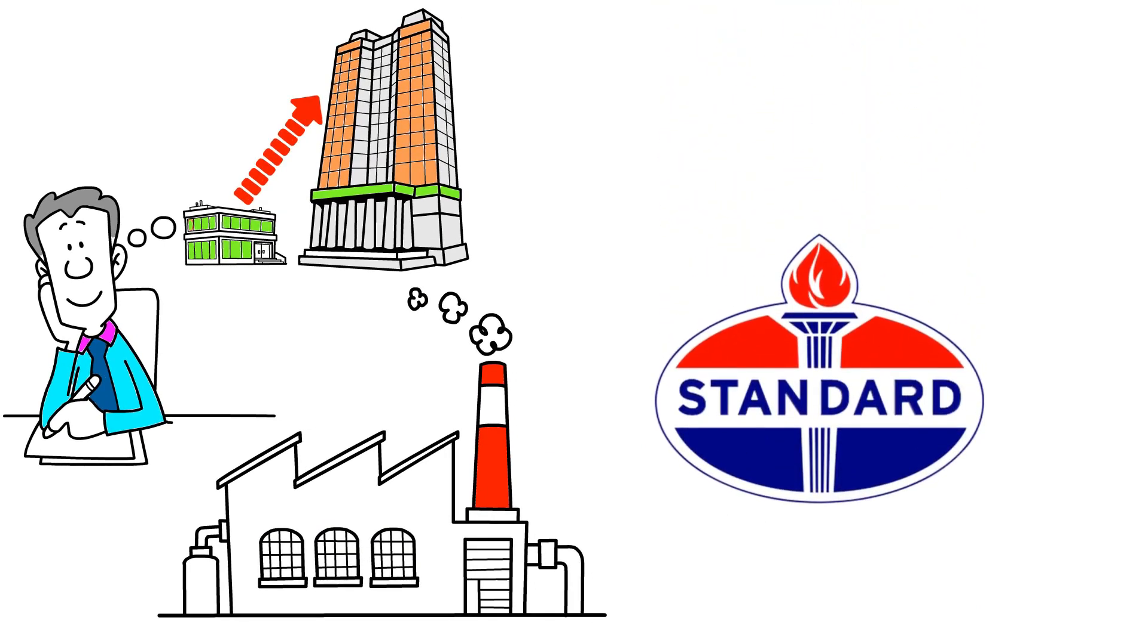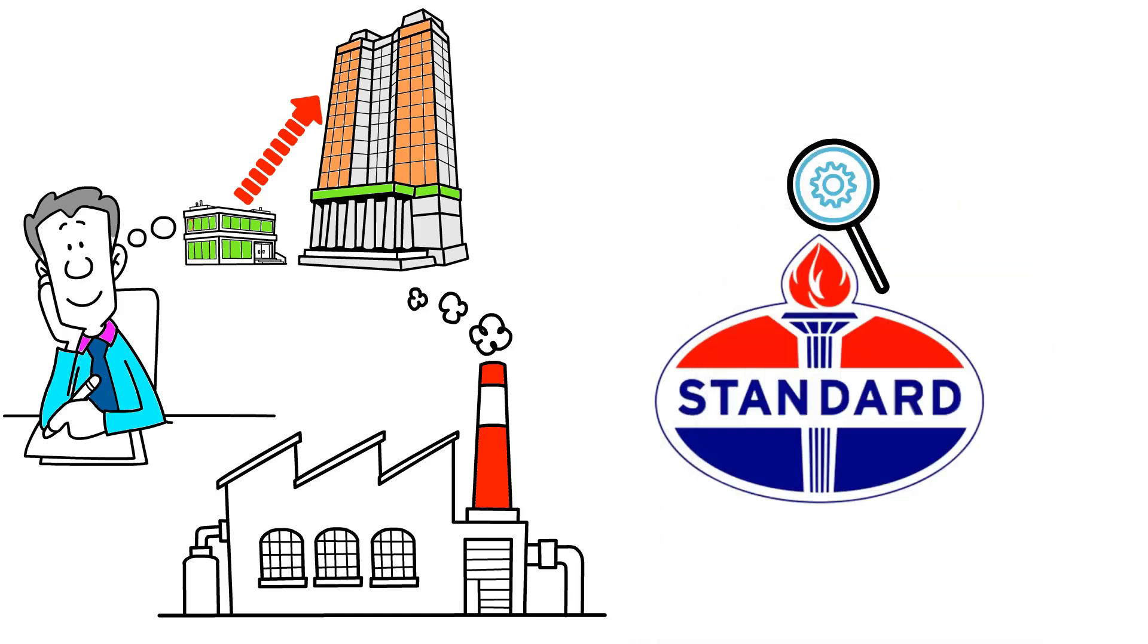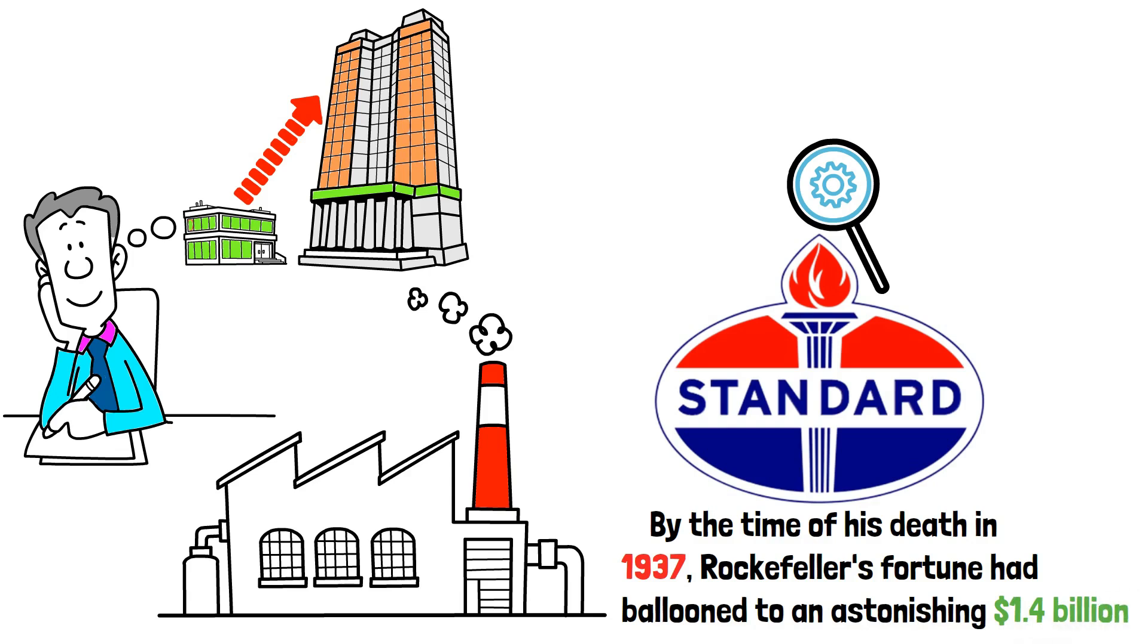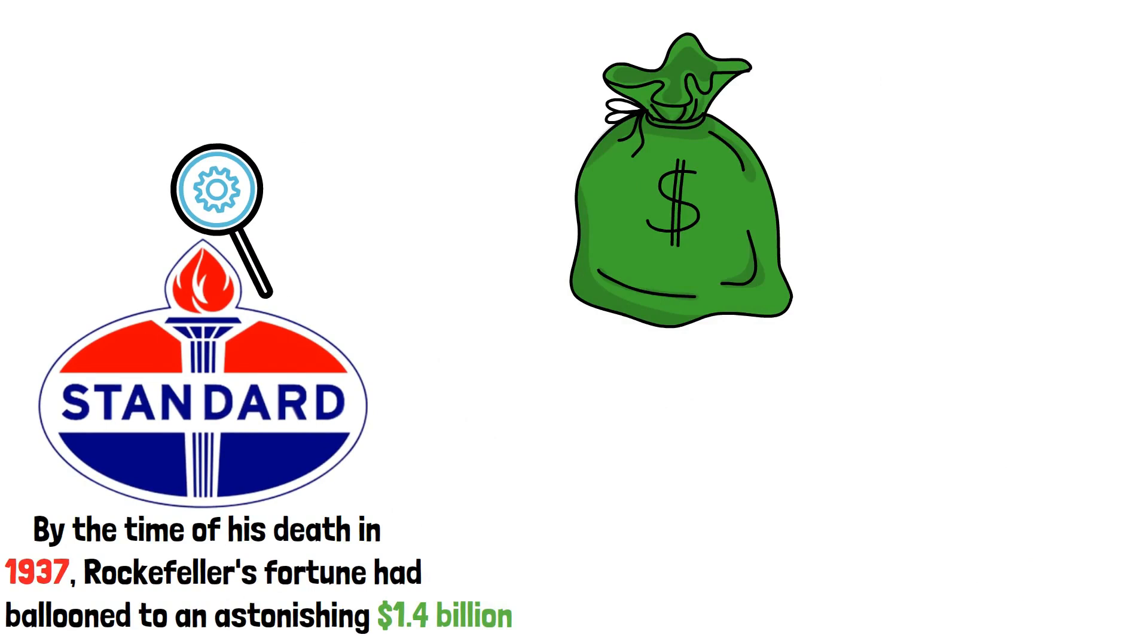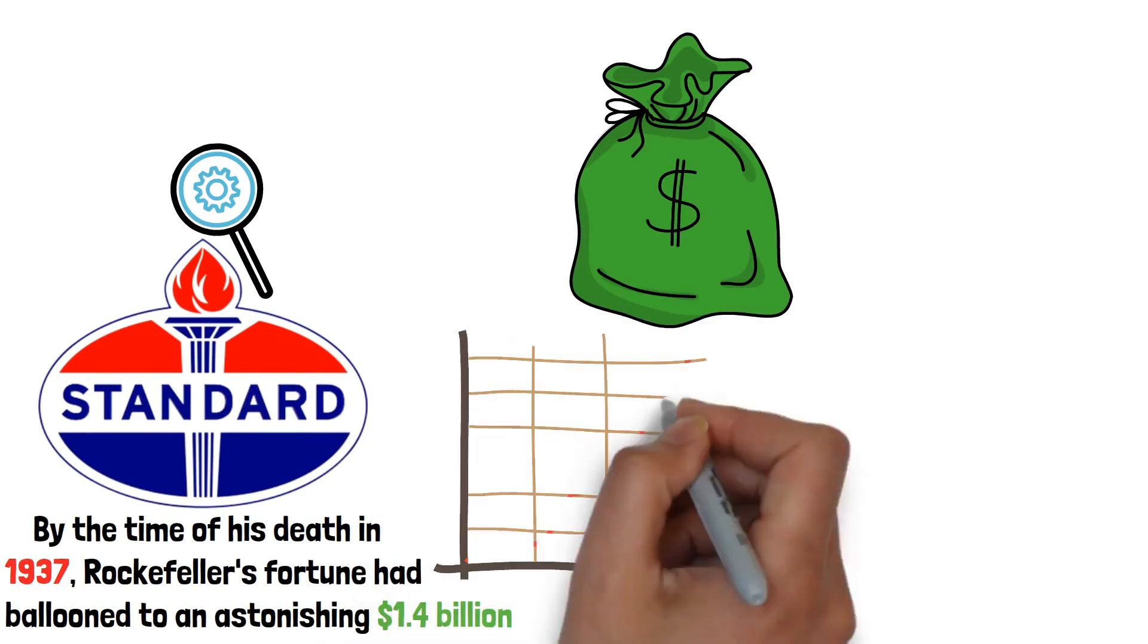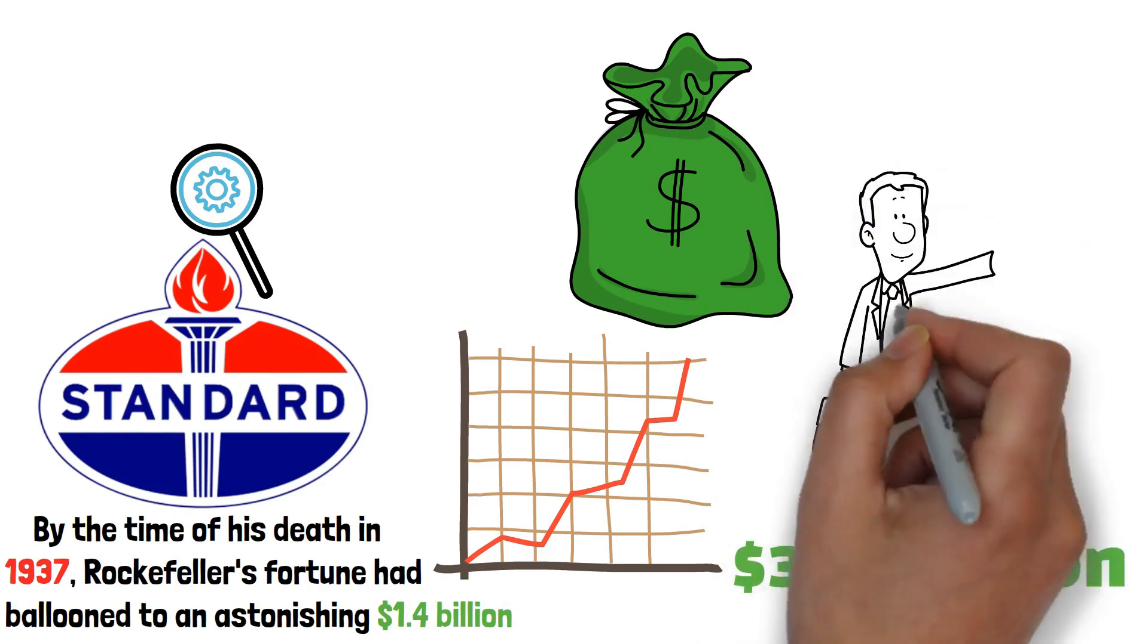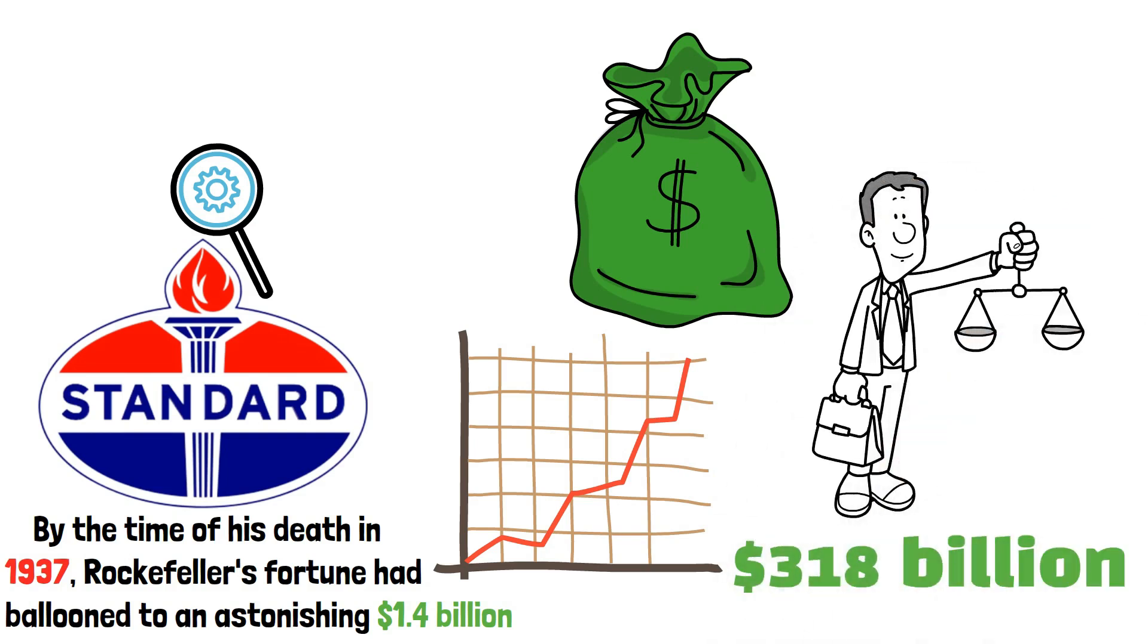By the time of his death in 1937, Rockefeller's fortune had ballooned to an astonishing $1.4 billion. To truly grasp the magnitude of this wealth, let's put it into today's context: adjusted for inflation, this would amount to approximately $318 billion, surpassing the net worth of many modern-day billionaires. This comparison highlights not only the vastness of Rockefeller's wealth but also the enduring impact of his financial principles and business acumen.